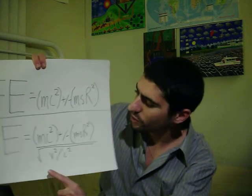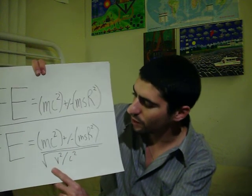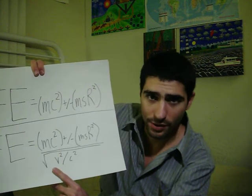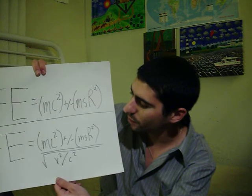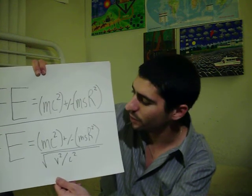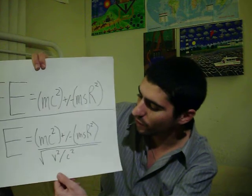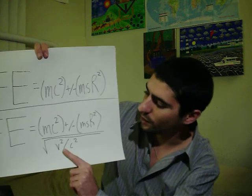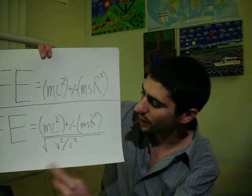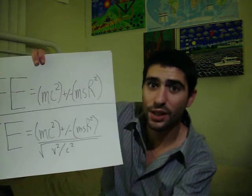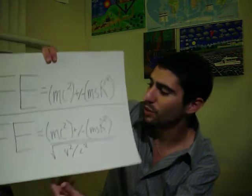The bottom portion of the equation, similar to the other two energy equations: fusionary energy equals mass times the speed of light plus or minus mass times the speed of rotation squared, divided by the square root of V squared divided by C squared. Now in this energy there's no one plus or one minus, because light energies and fusionary energies can reach the speed of light. So this mathematically shows it in that portion of the equation.